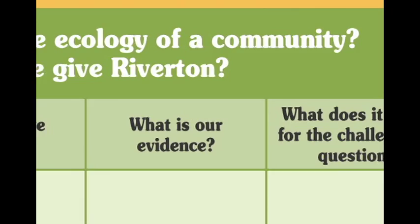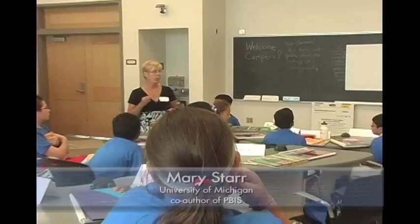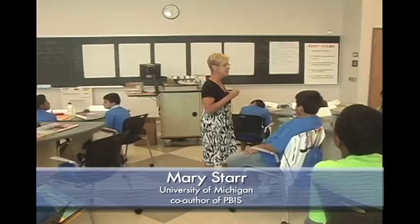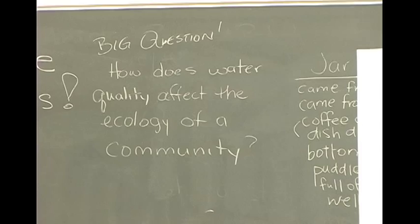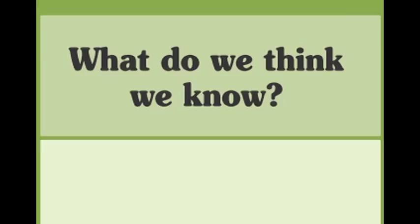The first question is: what do we think we know? The very first thing that we want to put on the project board are your ideas about what you think you know about that question — how does water quality affect the ecology of a community? When the class creates the project board at the beginning of each unit, the students record what they think they already know to address the unit's big challenge.